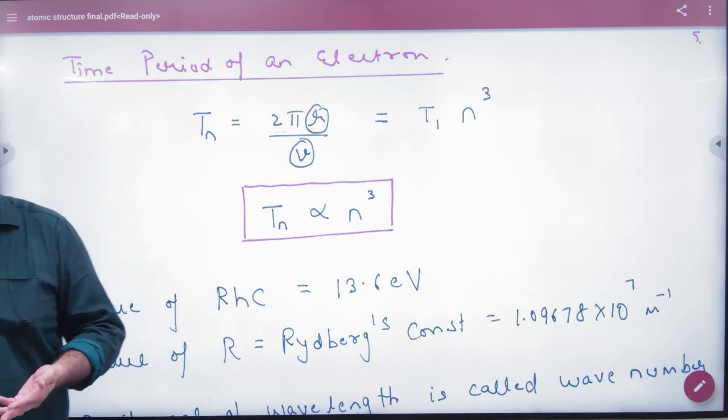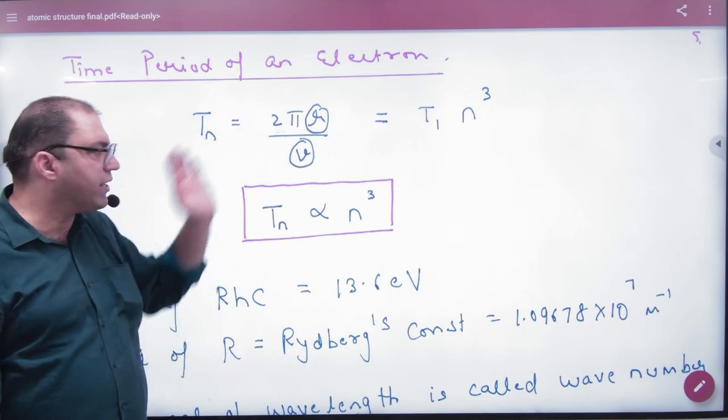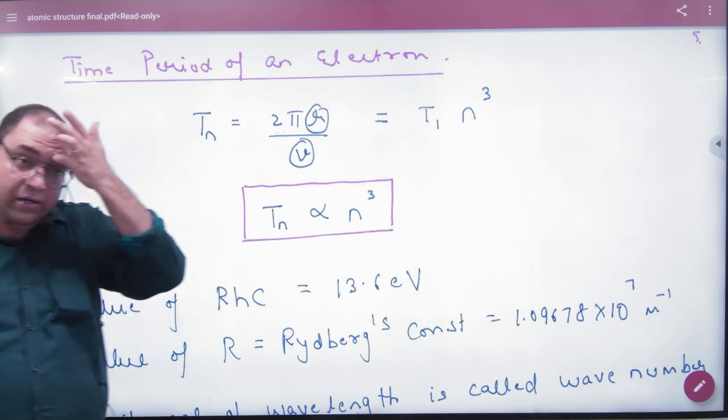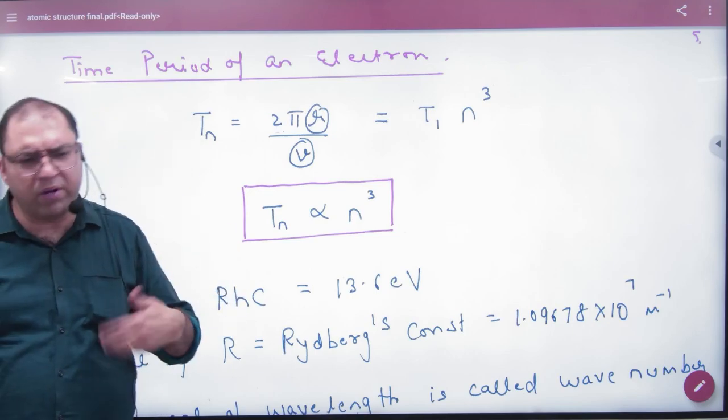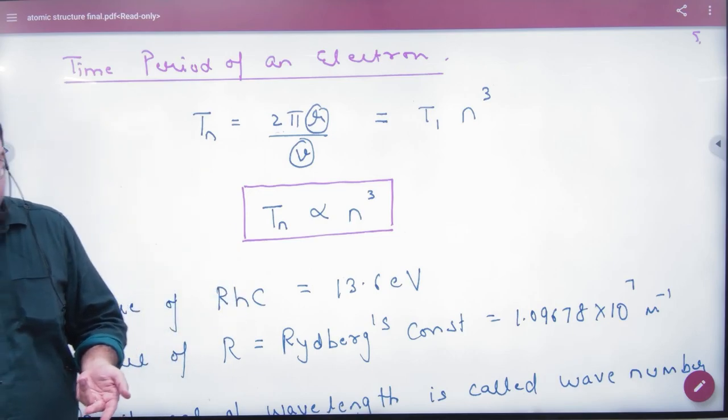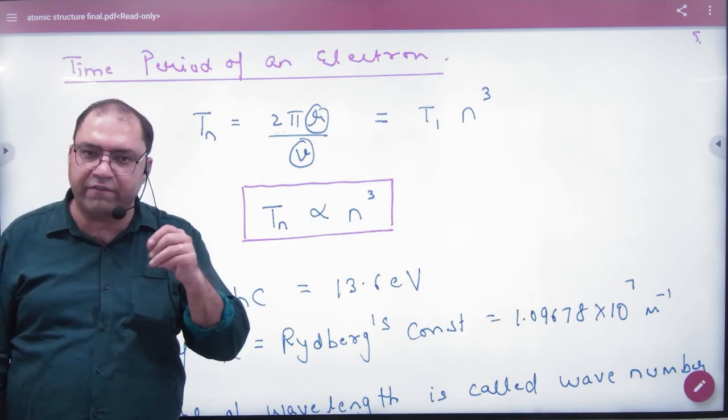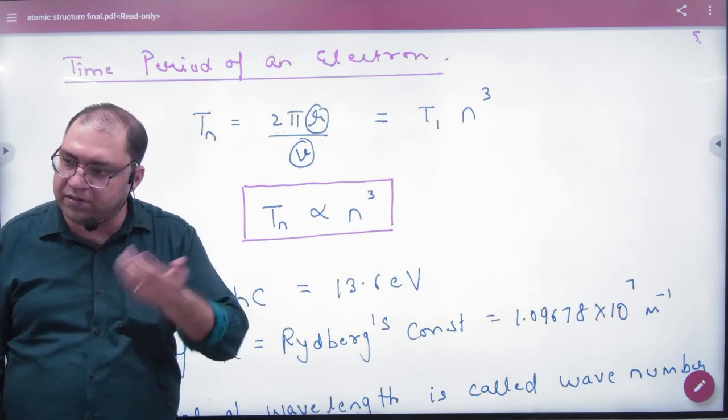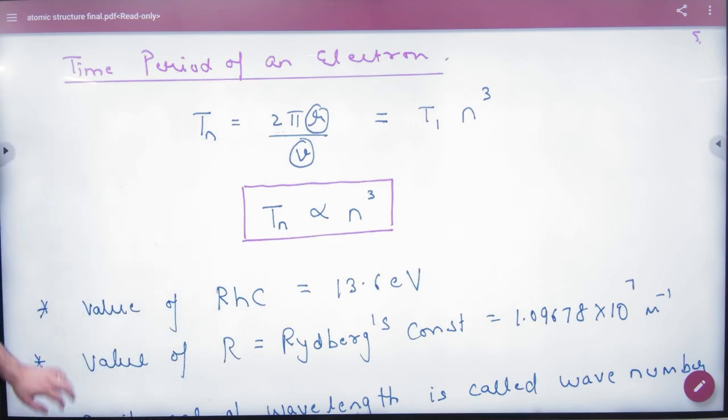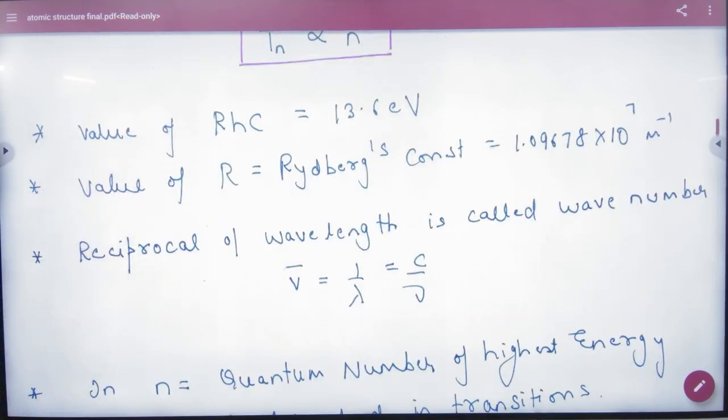How to do this question in numerical? We will not know the formula for r and v. Normally r is not given, and the velocity formula we know is 1/137 c/n. The value of time period can be calculated. I have written this. The multiplication of RhC is 13.6 electron volts. The value of R, Rydberg's constant, is 1.09678×10⁷ m⁻¹.